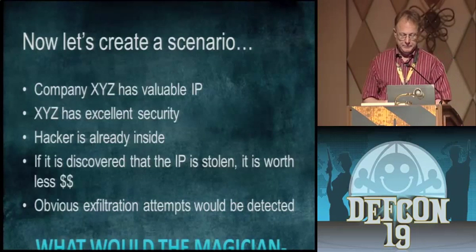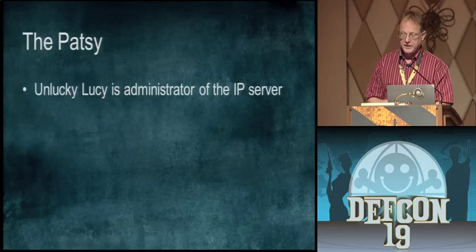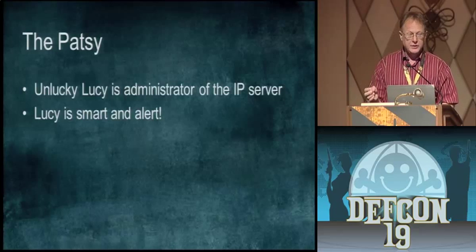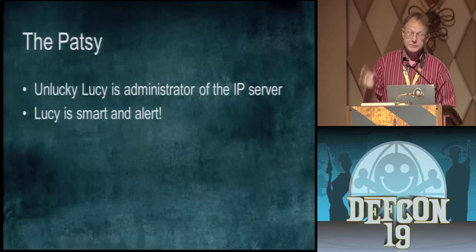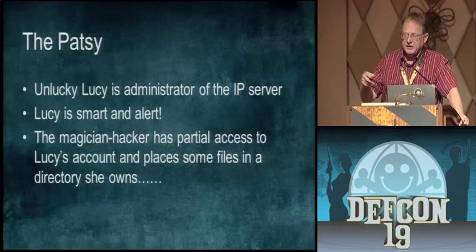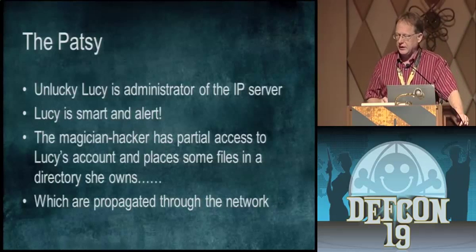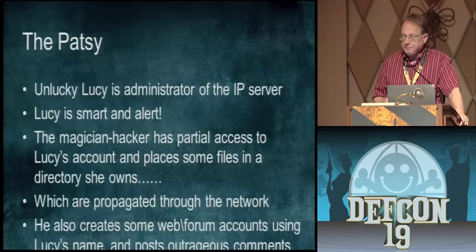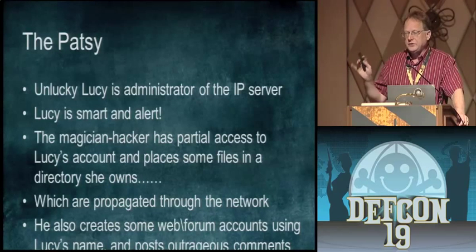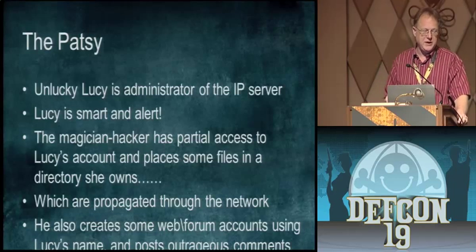First, we're going to have a patsy involved — 'Unlucky Lucy,' the administrator of this server. She's smart and really alert; if anything strange happened, she'd detect it and get it stopped. But the magician hacker has partial access to some of her files — maybe a directory she owns that he can put files into — and she has some files under her control that can be propagated throughout the network, like a startup batch file. He scopes it out, finds the patsy, and then — first step — goes to some web forms and creates an account using Lucy's name, creating some interesting little pieces of information to be discovered later.